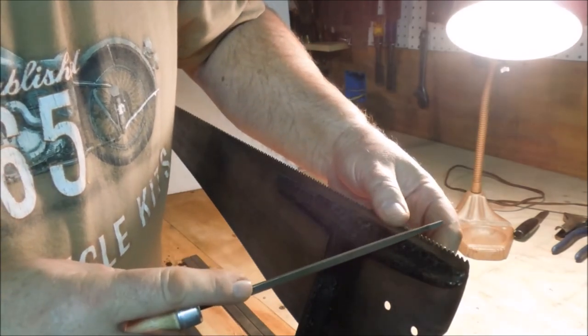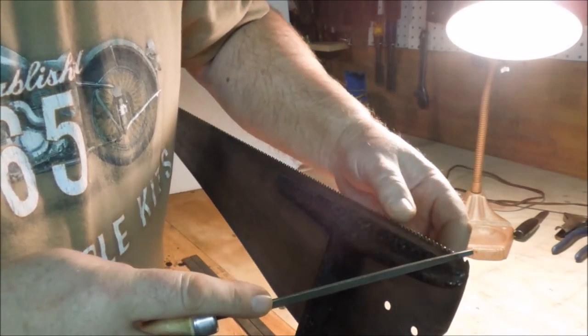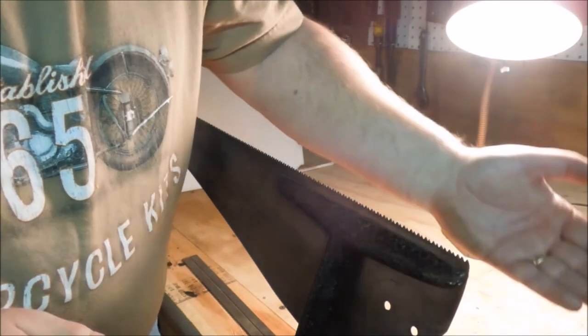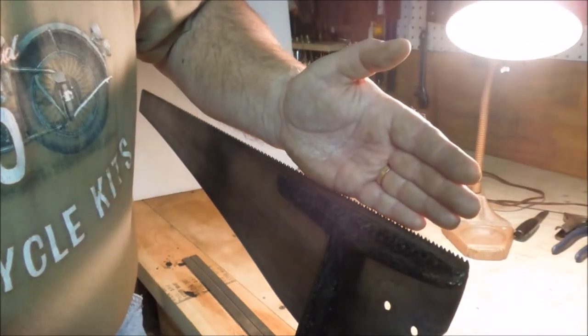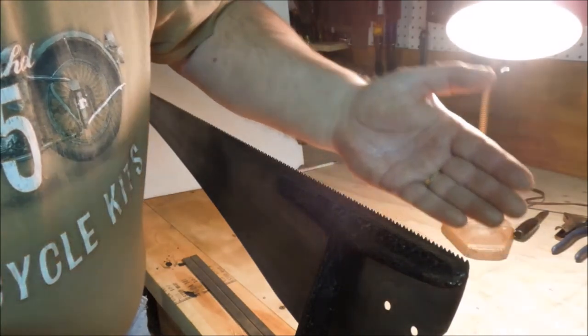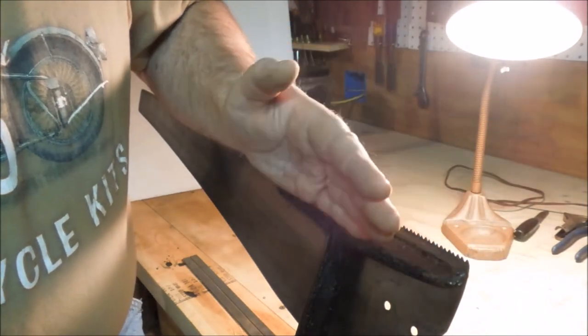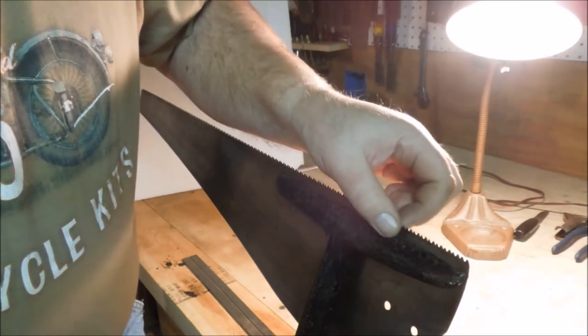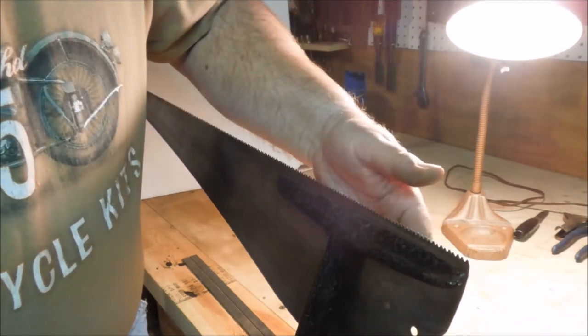We are going to look at the teeth and find the teeth that are tipped the other direction. Teeth are set in both ways, if you recall. One tooth is set to the left, the other tooth is set to the right. That gives us a wider kerf to allow for the saw blade to clear.